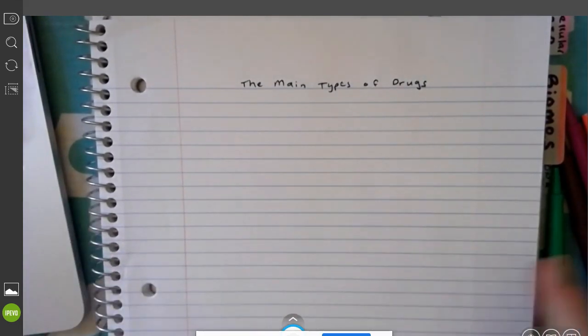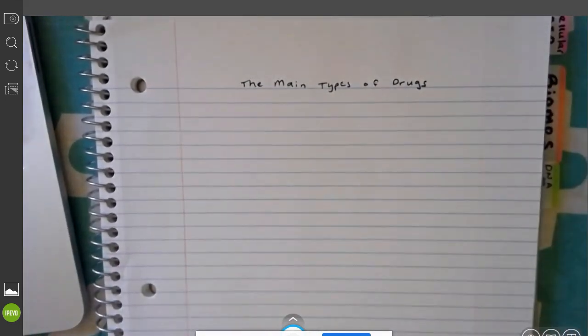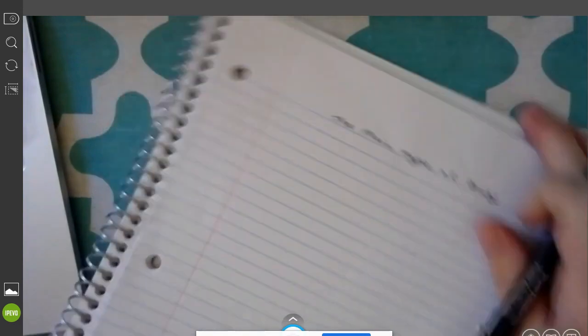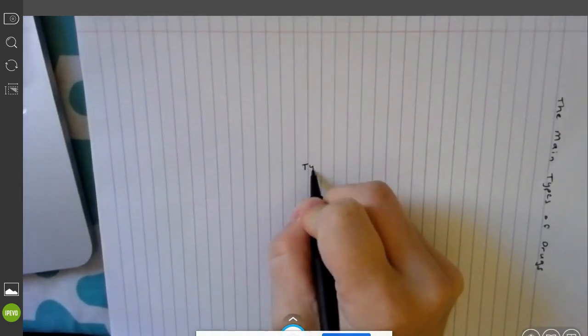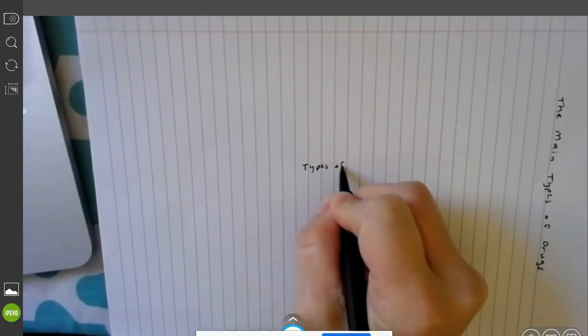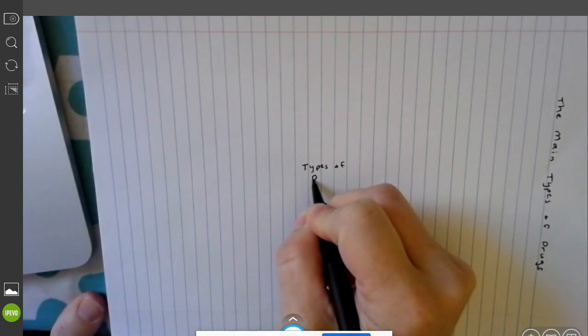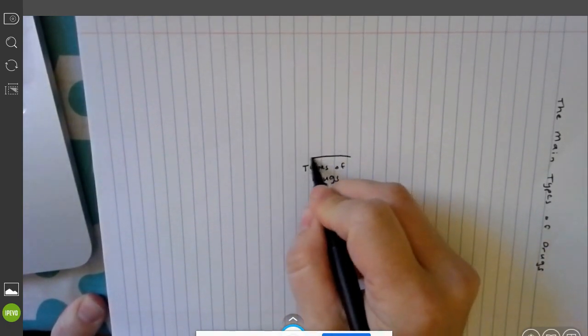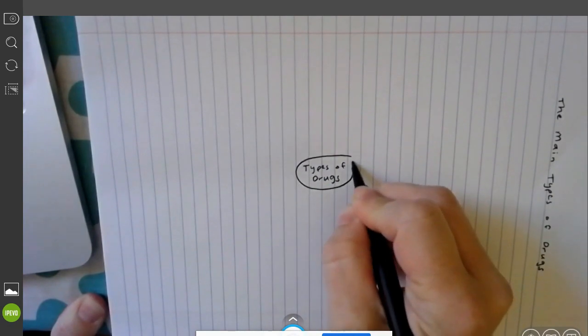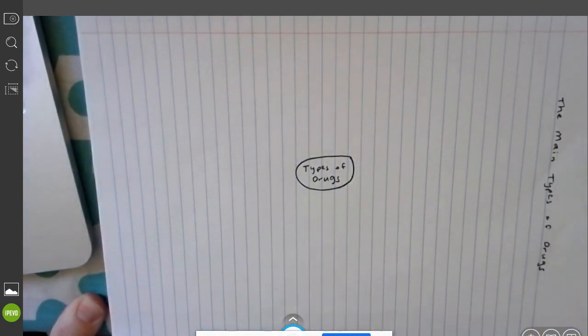I'm going to do this in concept map form because it's a good way to take a lot of details and put them in families. I'm going to turn it sideways and my main topic which goes in the middle is going to be types of drugs, circle around it.